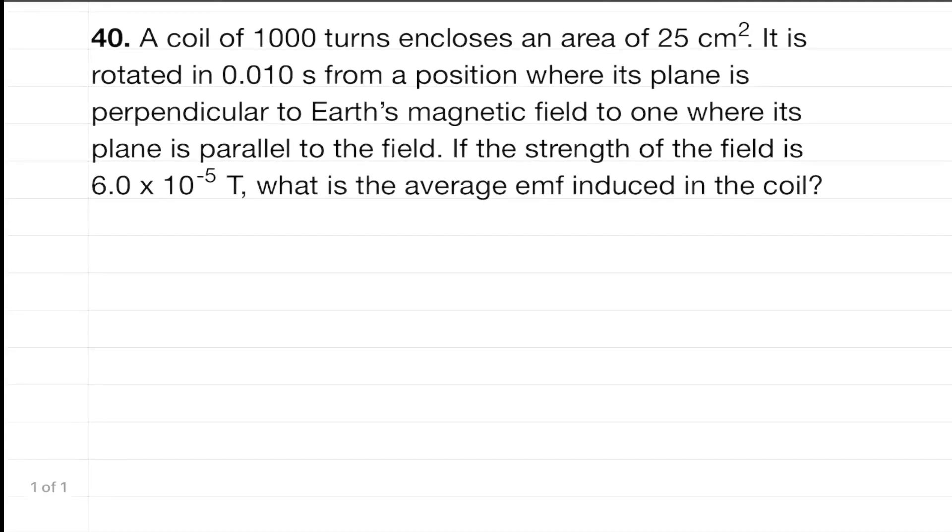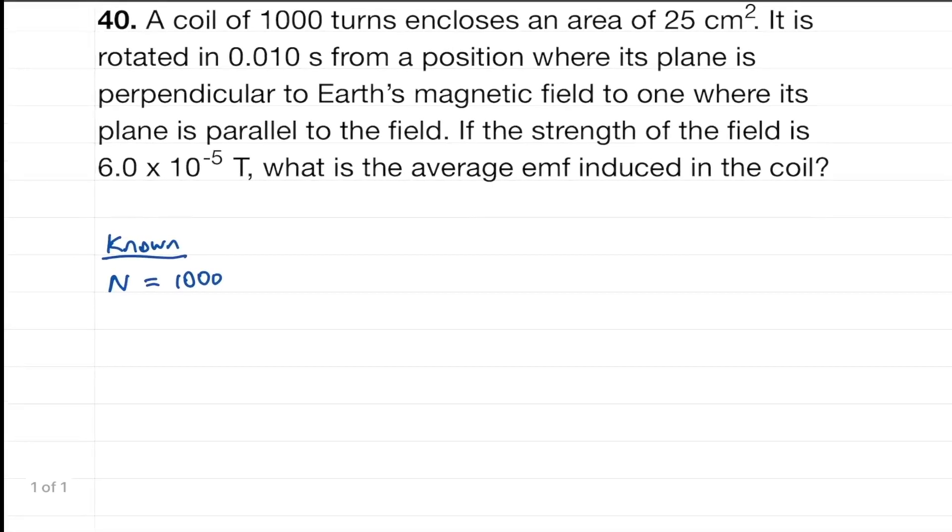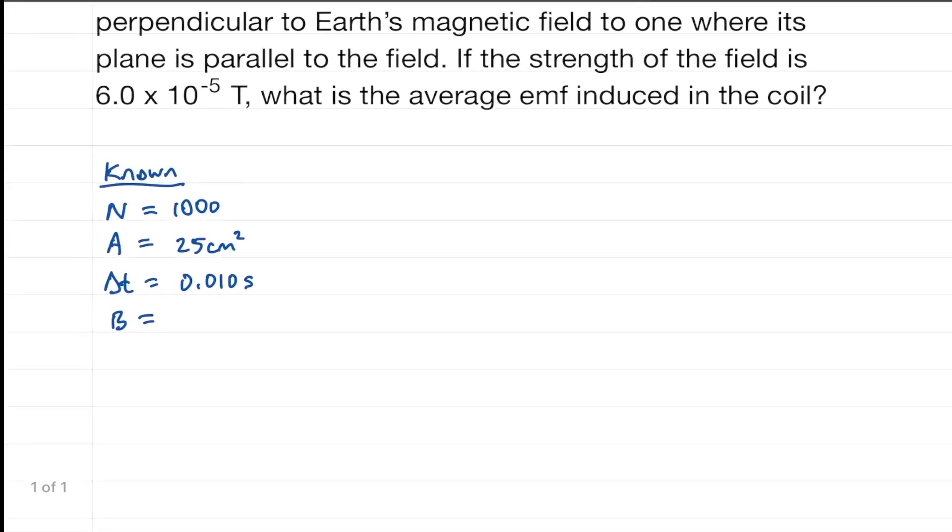Let's start with what we know. First off, the number of turns in the coil is 1,000. The area of the coil is 25 centimeters squared. The time in which the flux changes is 0.010 seconds, the magnetic field the coil is sitting in is 6.0 times 10 to the minus 5 Teslas, and we need to find the induced EMF.